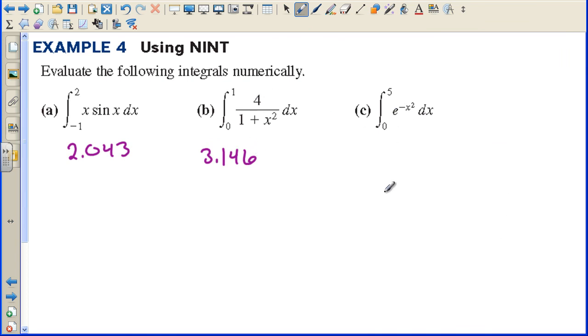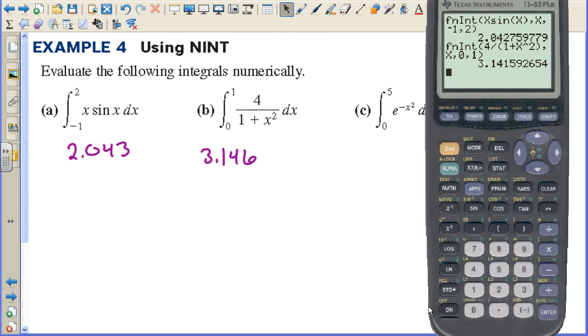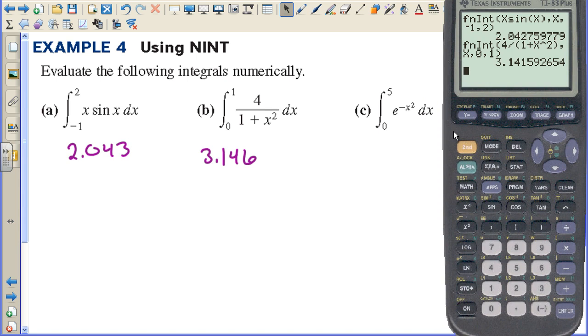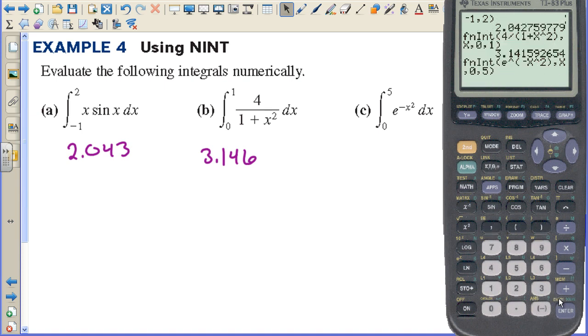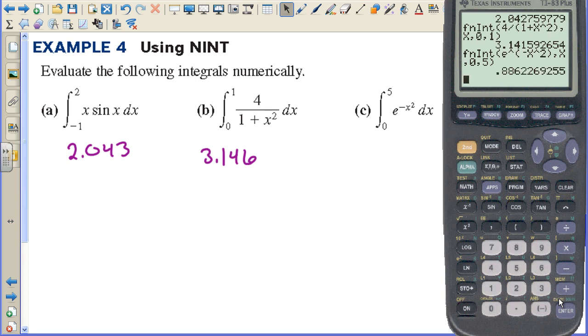On the last one, I'll just go to math. I believe this is number 9. I'm integrating e to the negative x squared. It's still the variable x, and we're evaluating from 0 to 5. We get a value of 0.886.